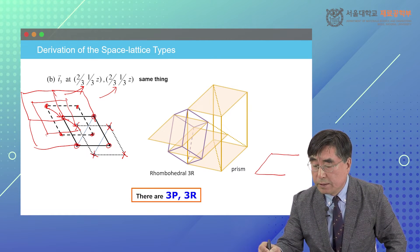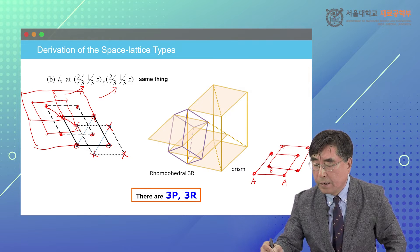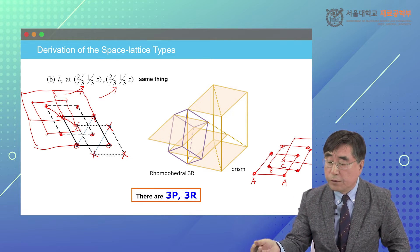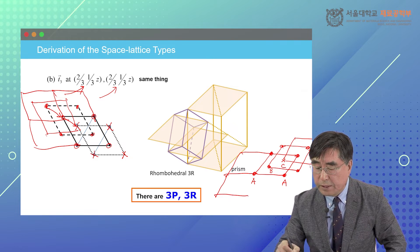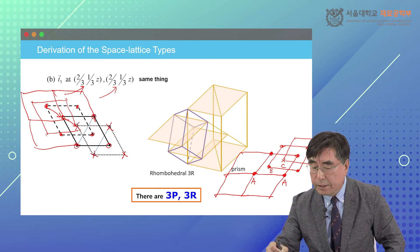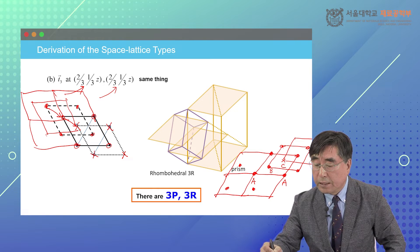Consider one three-fold — this is the A position. This is the B position of the next level, and the next level is at the C positions. So A, B, C, and then it goes back to A. When you define the unit cell, the B position here is the same B position, and the C position corresponds to positions here and here.